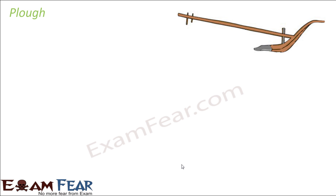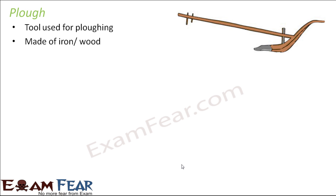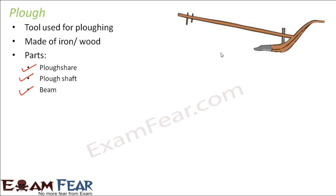Let us first talk about the plow. The name itself says it helps in plowing. It is a tool used for plowing because the soil just cannot be dug with your hands — you need something to actually dig the soil. It is generally made of iron or wood. A plow primarily has three important parts: plowshare, plowshaft, and beam. The plowshare is the part at one extreme end — it is an iron strip that is triangular in shape.